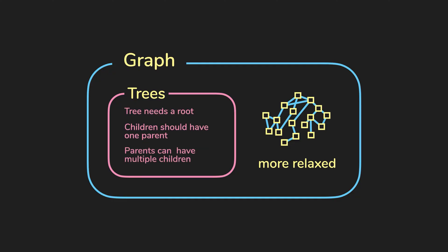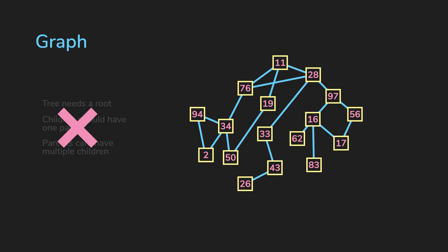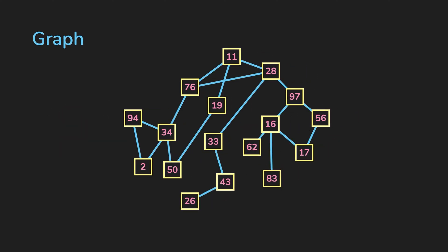There are no rules about root nodes and parent nodes like a tree. A graph is basically a set of nodes that are connected by edges. In a graph, we also call these nodes vertices.